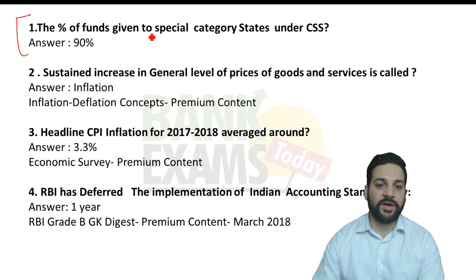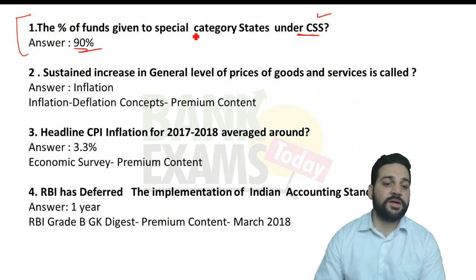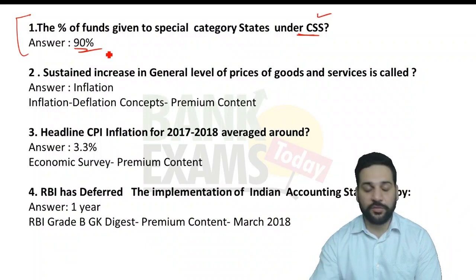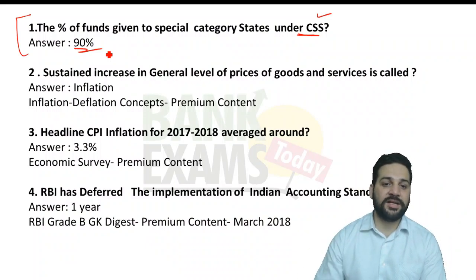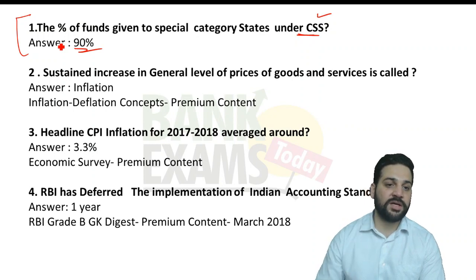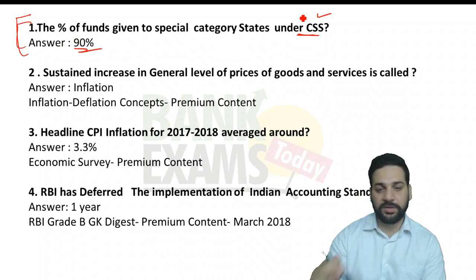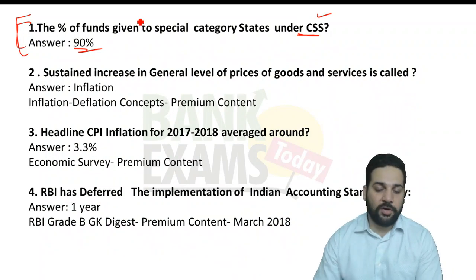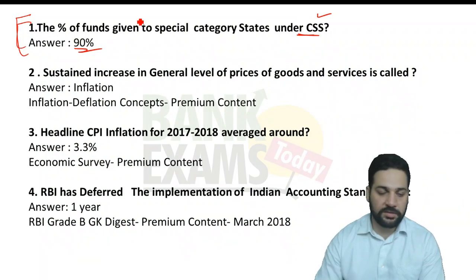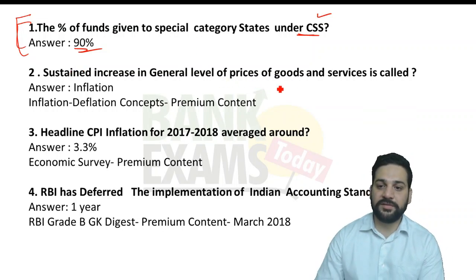Question one: the percentage of funds given to special category states under the CSS. We covered CSS, but we didn't cover how much percentage of funds is given to special category states. So that specific question was not covered in our study material — being honest about it.